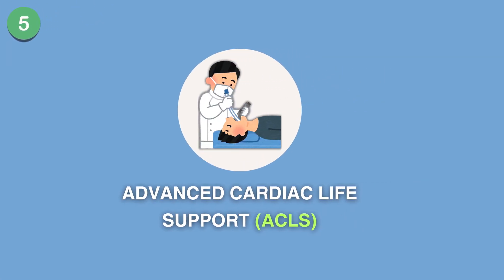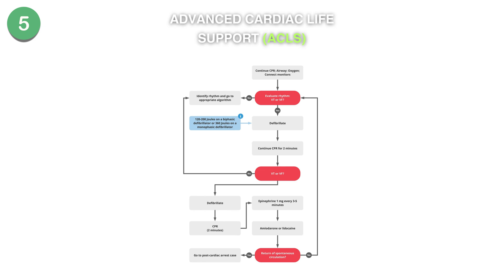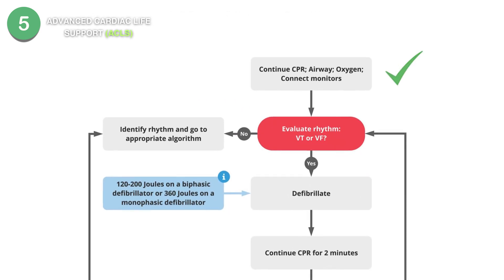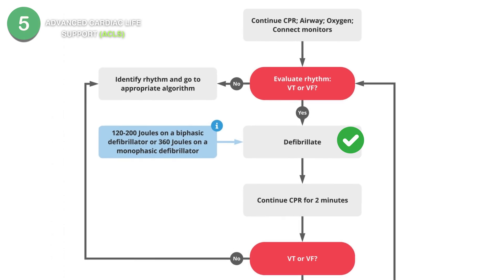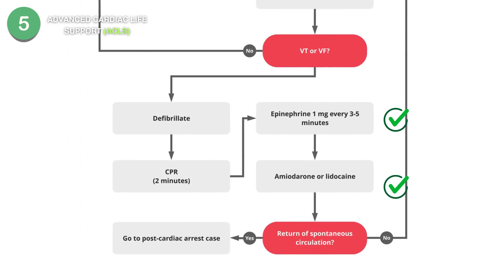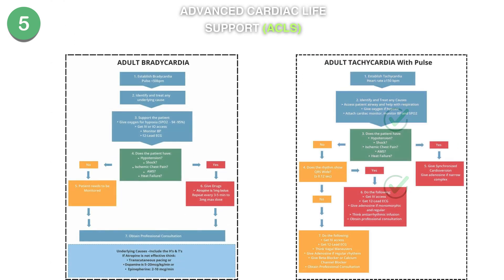Now let's move on to ACLS. This algorithm provides detailed steps for managing cardiac arrest, bradycardia, tachycardia, and post-cardiac arrest care. For cardiac arrest, the steps include high-quality CPR, defibrillation if the rhythm is shockable, administering medications like epinephrine and amiodarone, and managing the airway. For bradycardia and tachycardia, ACLS guides you in using medications, pacing, or cardioversion based on the patient's condition.